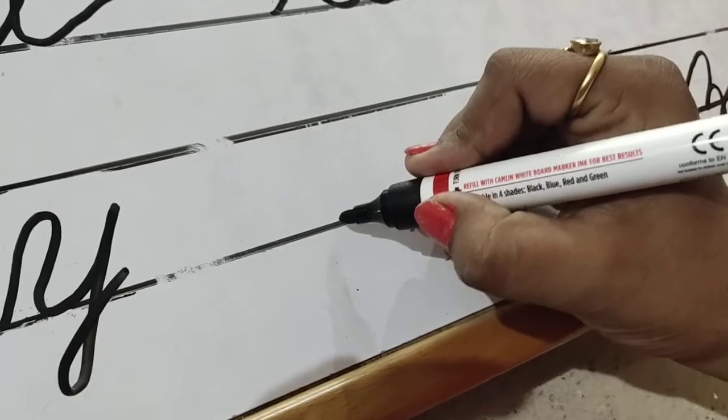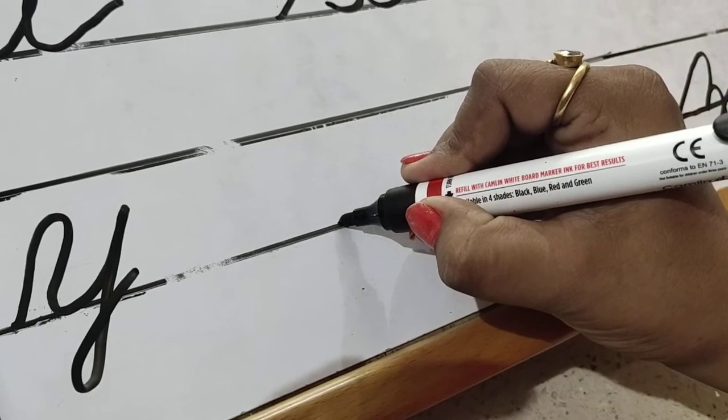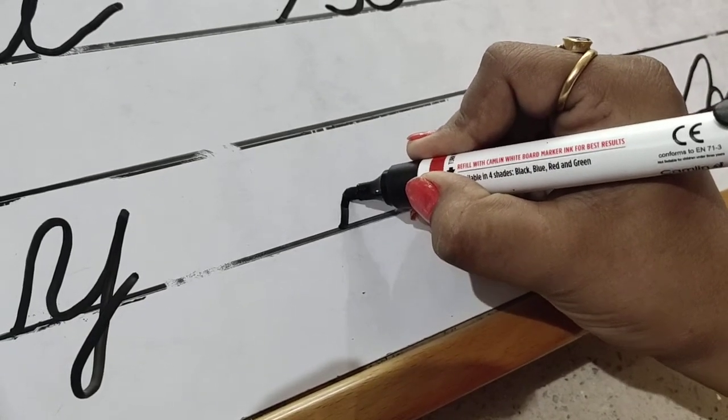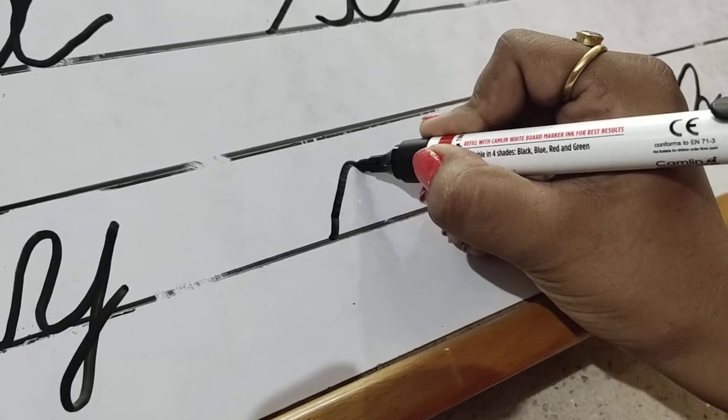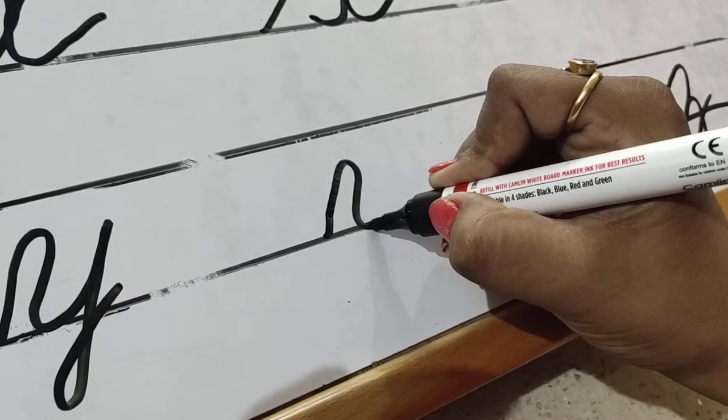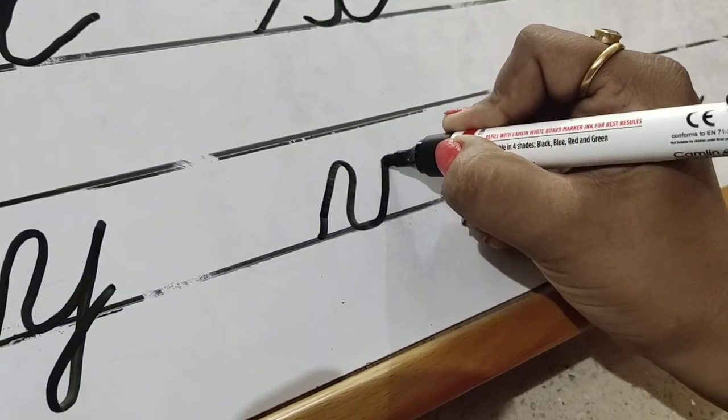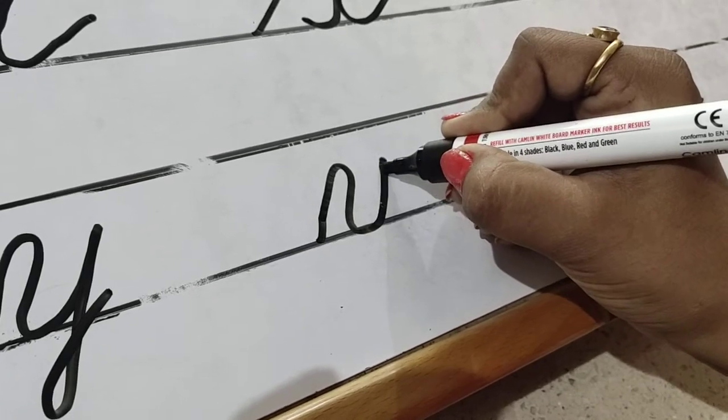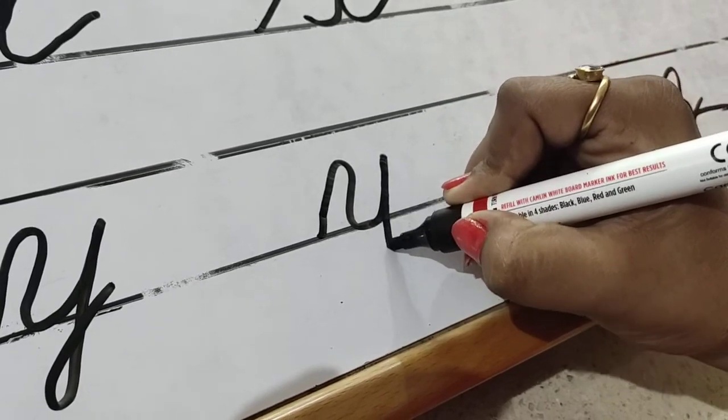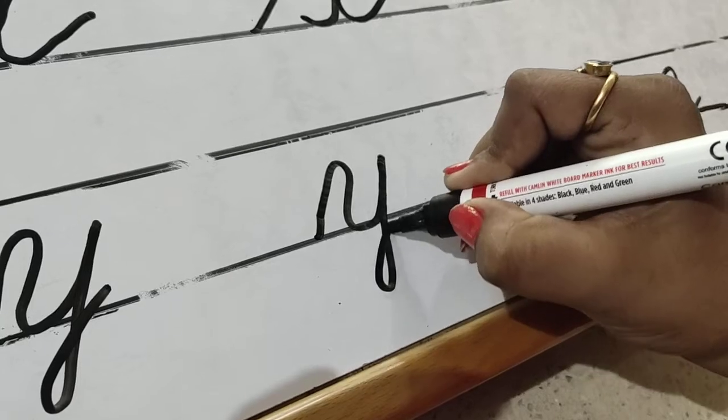Now see how to make Y. Y to make, lower line touch, slantingly up, curve, give it back, give it a touch curve, go up in the upper direction, go up the line, cross and touch.